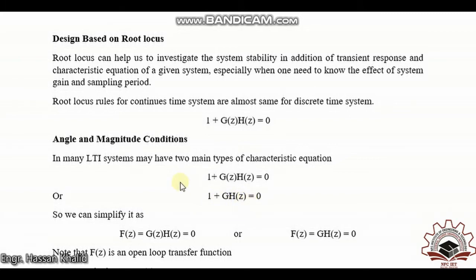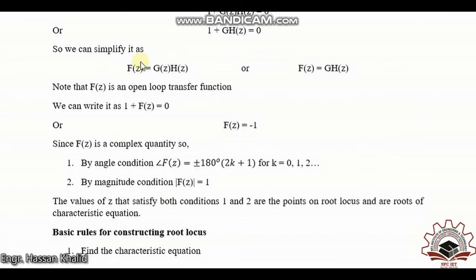We can represent both of these equations using one unique symbol. Let F(z) = G(z)·H(z), or F(z) = GH(z). Note: F(z) is actually the open loop transfer function. A correction here — the 'equal to zero' was mistakenly written on both terms; F(z) simply represents G(z)·H(z) or GH(z).